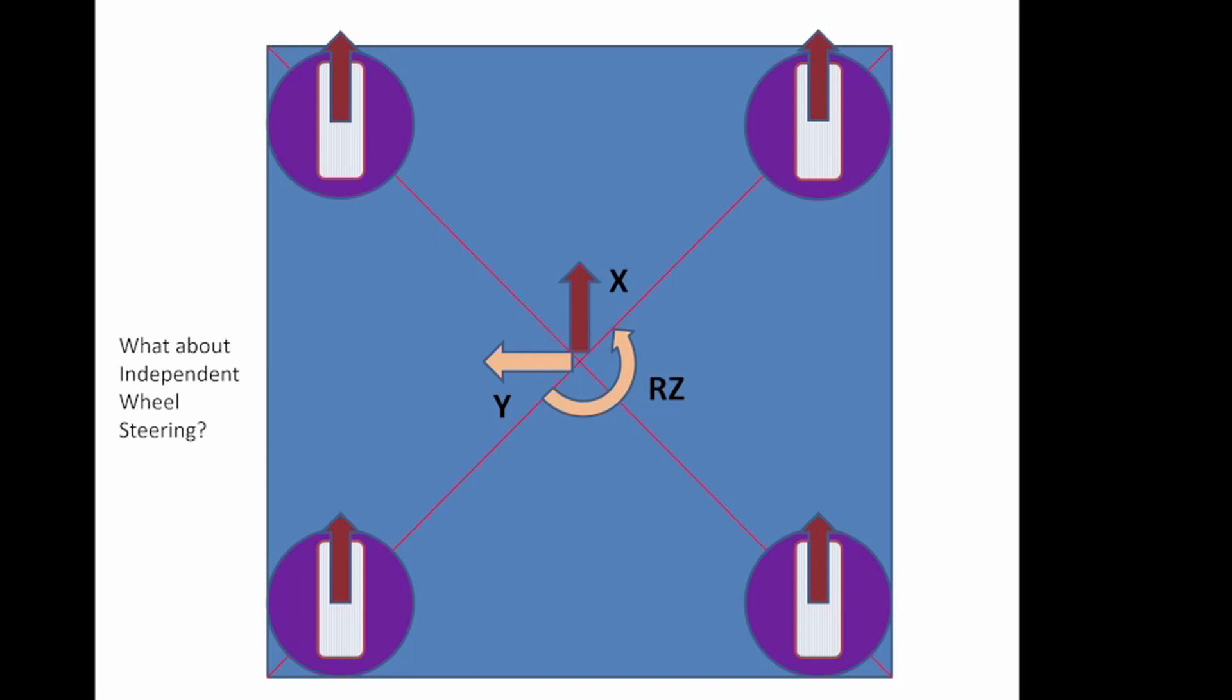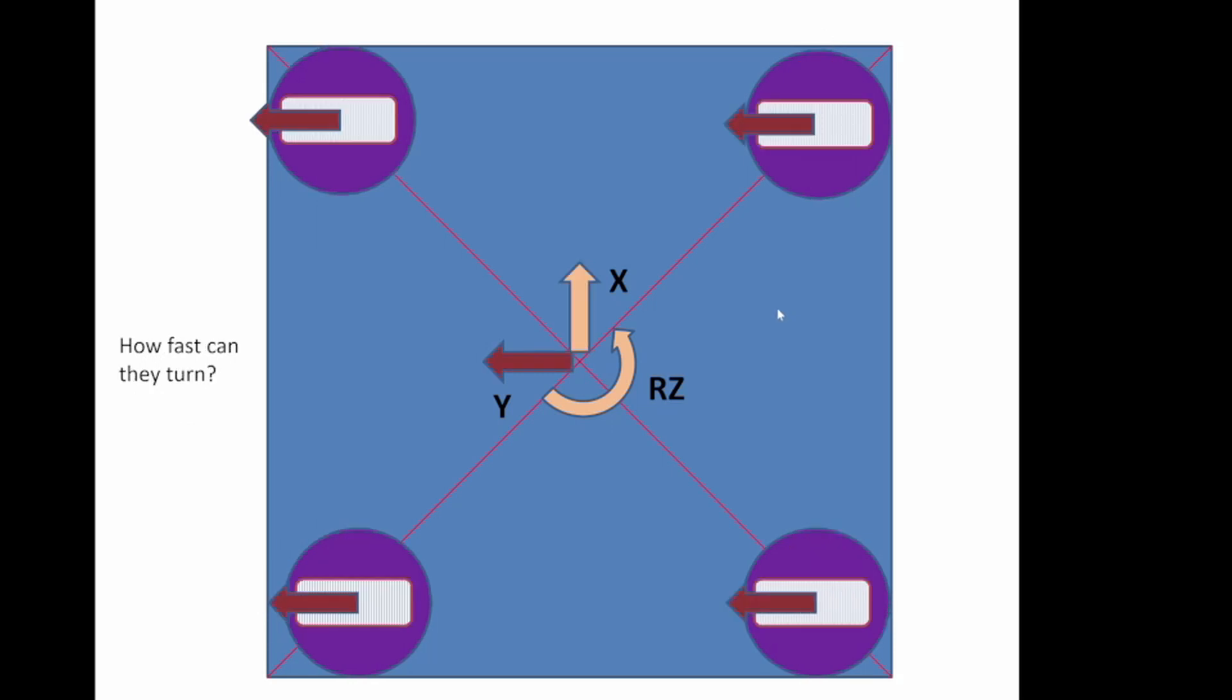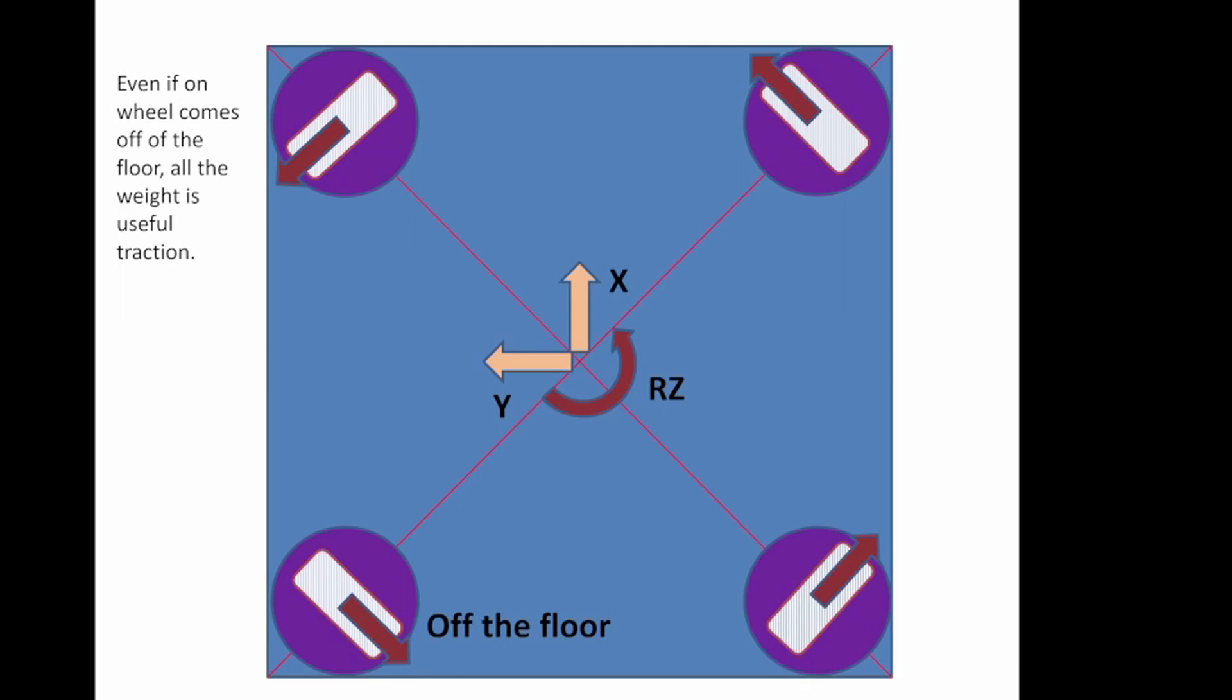So, what happens if you have independent wheel steering? Four wheels, independent steering, you can move them wherever you want. Obviously, X is not a problem. Obviously, Y is not a problem.